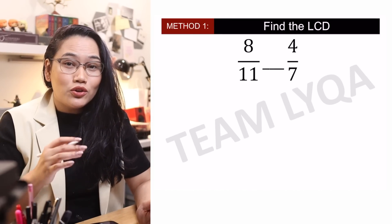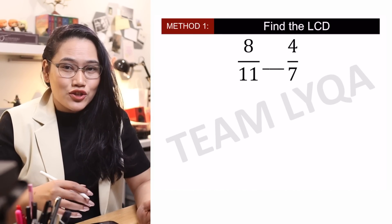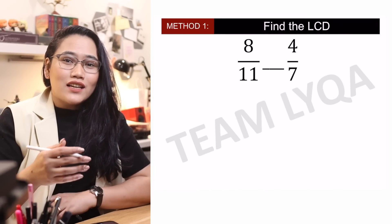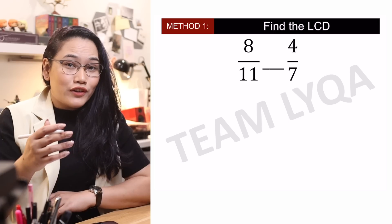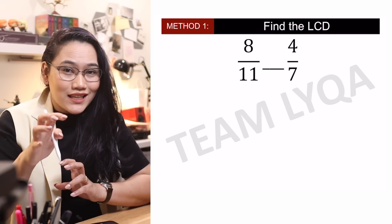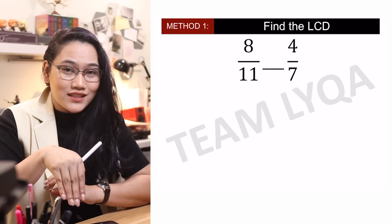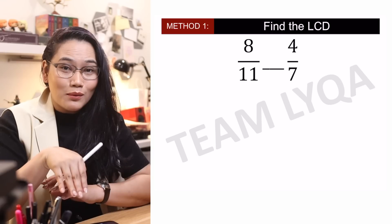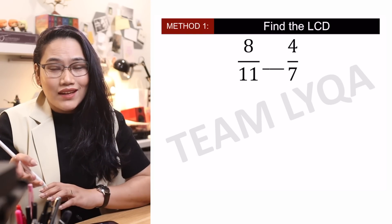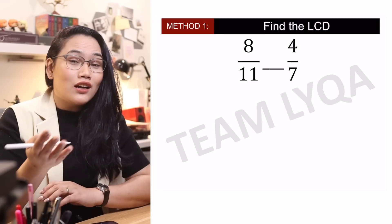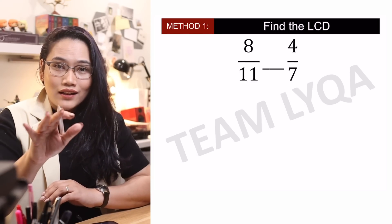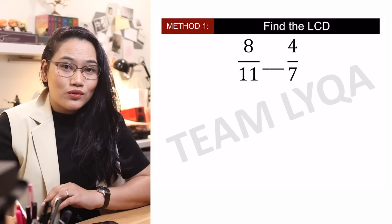The first way to determine kung ano ang mas malaking fraction is just to find the LCD. Ang gagawin lang natin, ditatransform natin yung fractions. Dapat pareho sila nung apelido or yung last name — yung number na nasa ilalim, yung denominator. Tapos, mas madali mo na makikita, kasi kung sino na lang ang mas malaki ang numerator, siya ang mas malaking fraction. Let me show you how to do that.